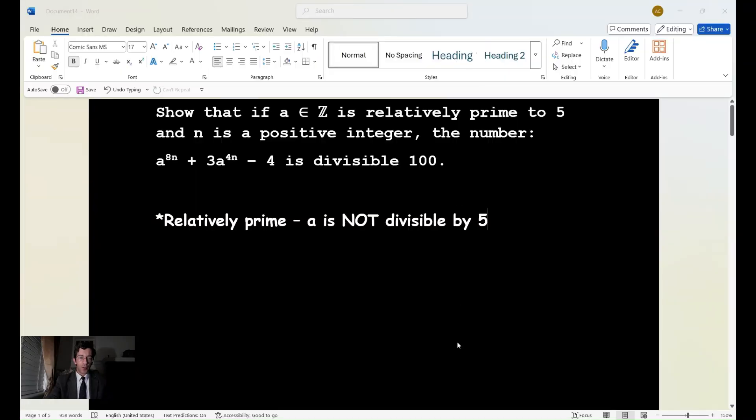All right, so hopefully you can see on the board. Show that if a is an element of the integers, if a is relatively prime to 5, and n is a positive integer,